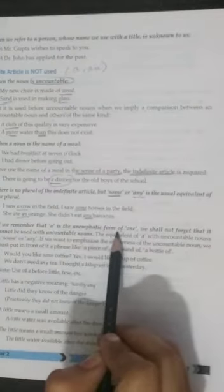If we remember that a is the unaffected form of one, we shall not forget that it cannot be used with uncountable noun. The equivalent of a with uncountable noun is some or any.